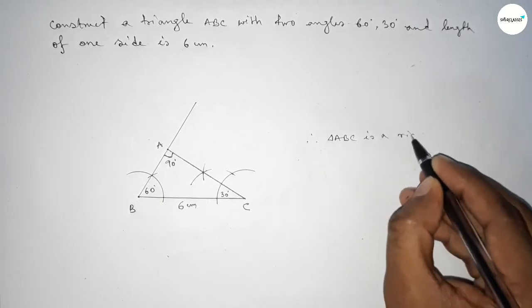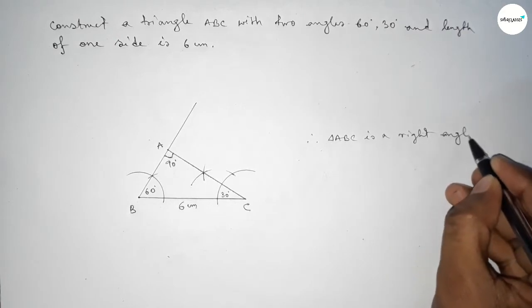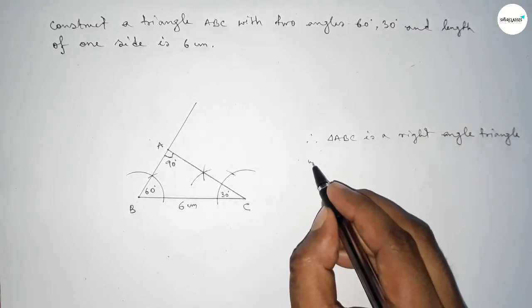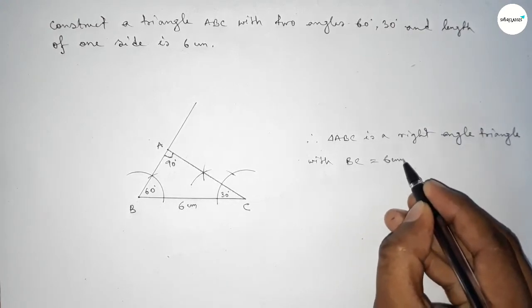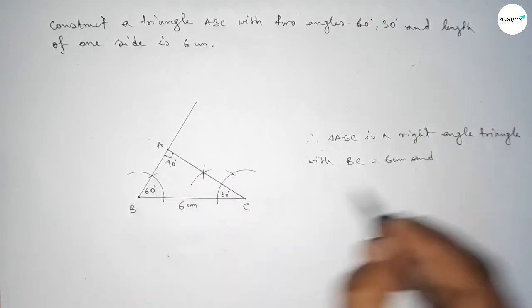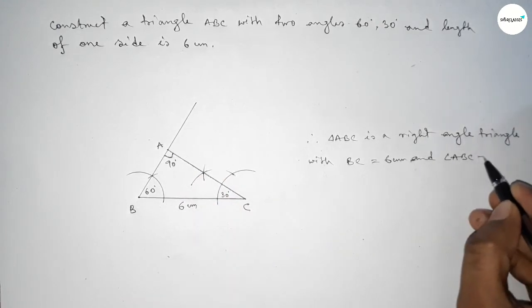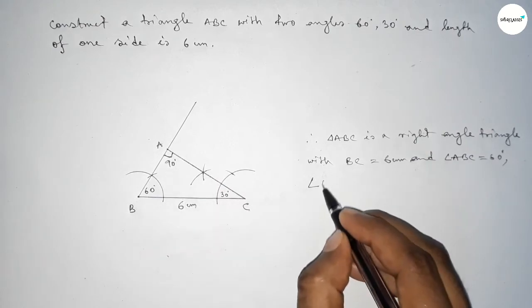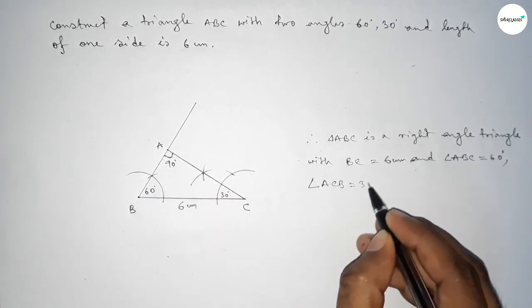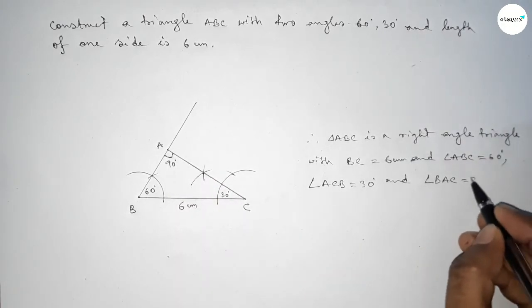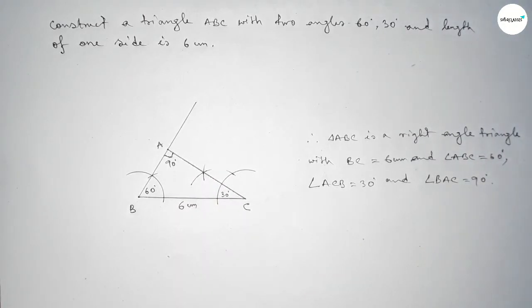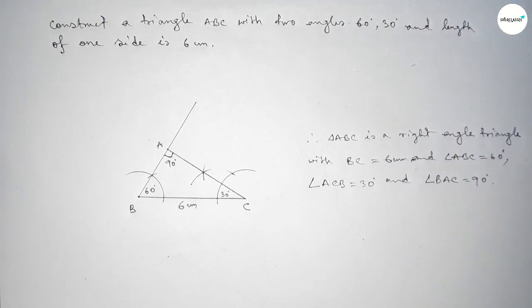Therefore, triangle ABC is a right angle triangle with the given side BC equal to 6 centimeters, angle ABC equal to 60 degrees, angle ACB equal to 30 degrees, and angle BAC equal to 90 degrees, since 60 plus 30 equals 90, and 90 plus 90 equals 180. That's all — thanks for watching, please share it.